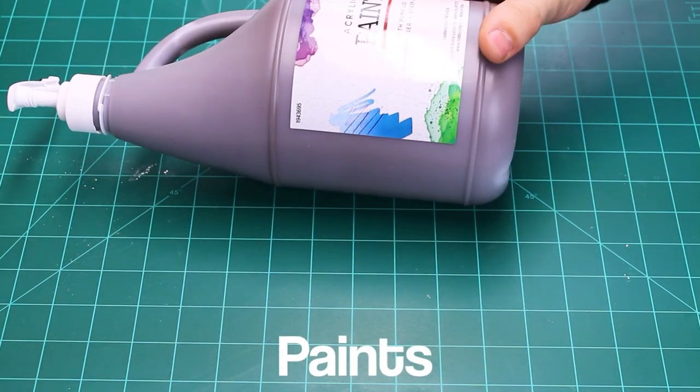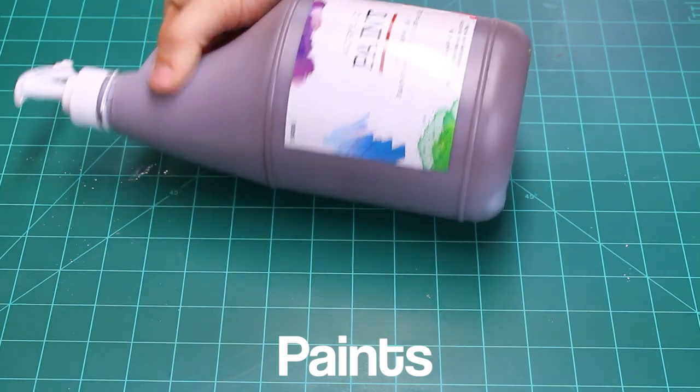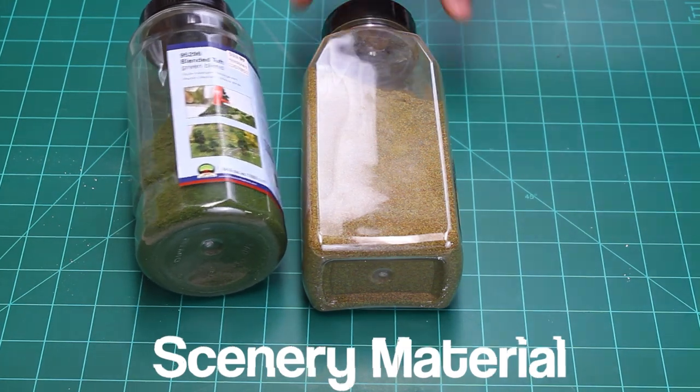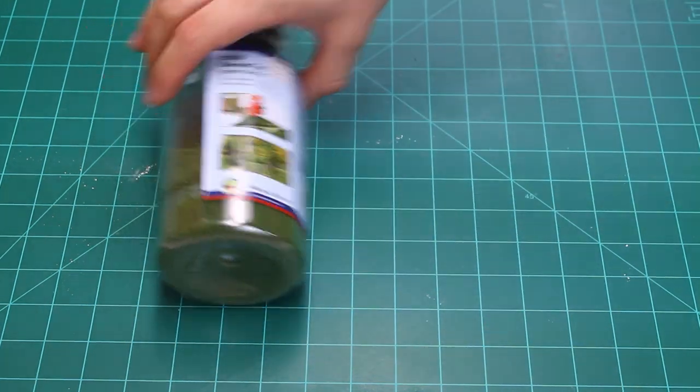And I use an assorted assortment of paints, but this one is burnt umber. I use it for all my ground. And then all your scenery material. I don't have a big mix. So I'm using like a green blended turf and then like a fall colored type of thing for dead foliage.